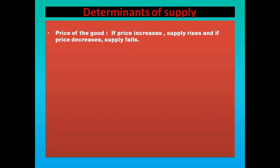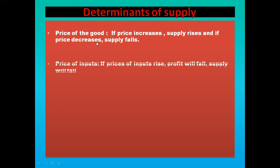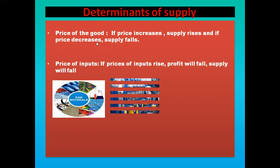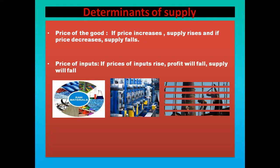The first factor is price of the good. If the price of the good increases, the supply will rise because the producer will supply more in the market. If the price decreases, the supply will fall because they will earn less profit.